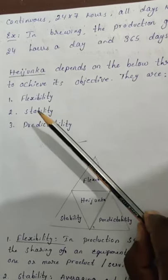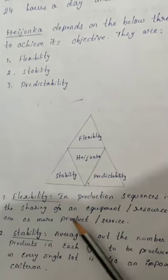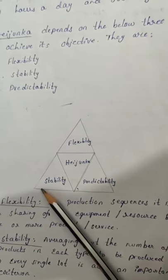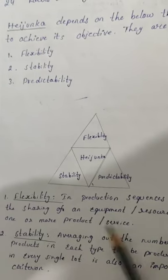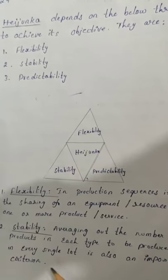Heijunka depends upon three aims for achieving its objectives: flexibility, stability, and predictability. Heijunka has three categories. First, flexibility — in this production sequence, it is a sharing of equipment or resources between one or more products or services. Second, stability — averaging out the number of products of each type to be produced in every single lot is also an important criteria. Third, predictability — much required for an organization to devise its schedule, batch size, and product type of the orders in the changeover.